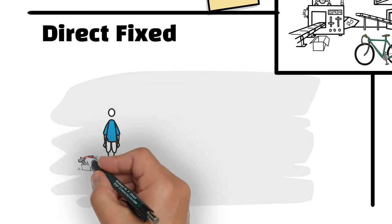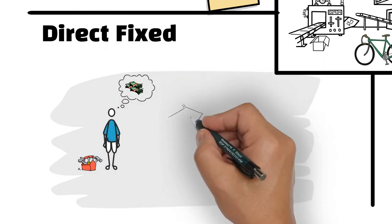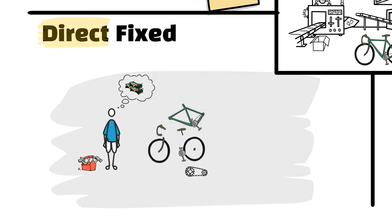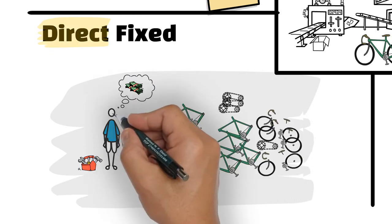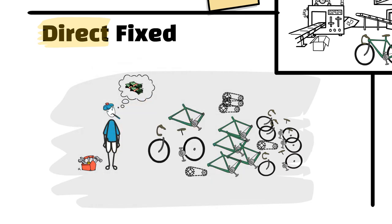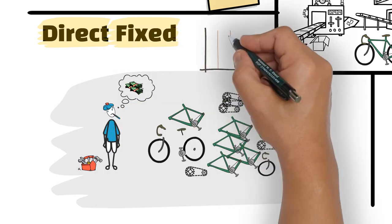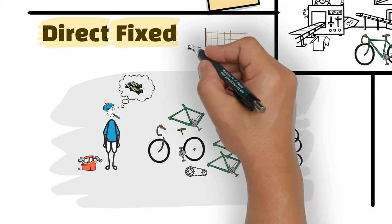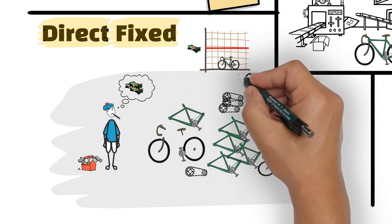The salary of the bike assembler who does nothing else other than assembling the bikes is a direct-fixed cost. It is a direct cost because the assembler is fully assigned to the bike-assembly task. However, it is a fixed cost because the assembler receives fixed salary payments each month regardless of the number of bikes he assembles monthly.